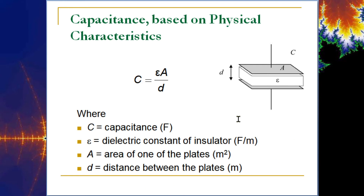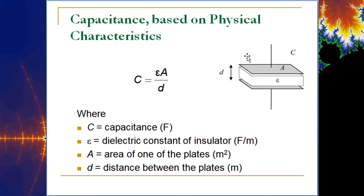The physical characteristics of a capacitor determine its capacitance. Similar to how a resistor's value depends on length, material, and cross-sectional area, capacitance in farads equals the permittivity times the area of each plate divided by the distance between the plates. The closer the plates are together, the stronger the attraction and the higher the capacitance. Using a higher dielectric constant material allows you to get a much higher capacitance with the same plate size and distance.